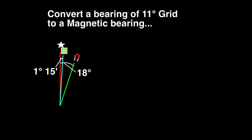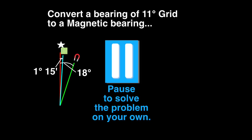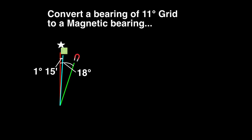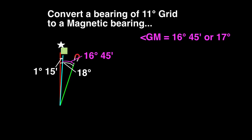Problem 4. Convert a bearing of 11 degrees grid to a magnetic bearing. Magnetic north is 18 degrees east of true north. Grid north is 1 degree 15 minutes east of true north. The angle between grid north and magnetic north is the 18 degrees from magnetic to true, less the 1 degree 15 minutes from true to grid. That would be 16 degrees 45 minutes, which will round up to 17 degrees.